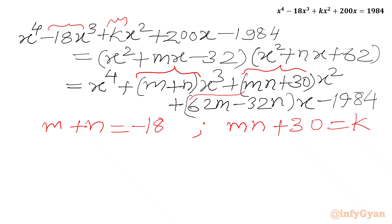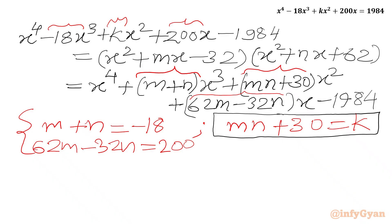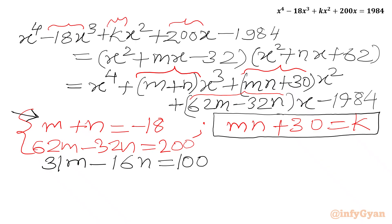Comparing the coefficient of x from both sides gives the equation 62m minus 32n equals 200. Now from these two equations we solve for m and n, then substitute to find k. Dividing the x-coefficient equation by 2: 31m minus 16n equals 100. Multiplying the first equation m plus n equals minus 18 by 16: 16m plus 16n equals minus 288.